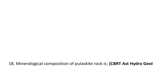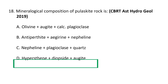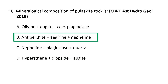Next question: the mineralogical composition of pulaskite rock is: a) olivine, augite, and calcic plagioclase, b) anorthoclase, aegirine, and nepheline, c) nepheline, plagioclase, and quartz, d) hypersthene, diopside, and augite. Pulaskite is a variety of nepheline-bearing alkaline feldspar syenite containing alkali feldspar, varying amounts of sodic pyroxenes and amphiboles, and minor nepheline. The correct mineralogical composition is anorthoclase, aegirine, and nepheline. B is the correct option.